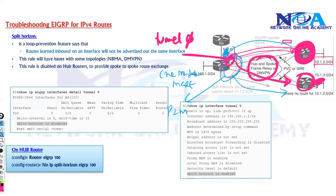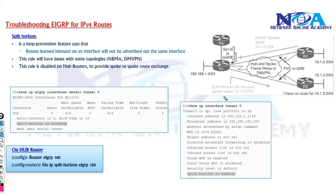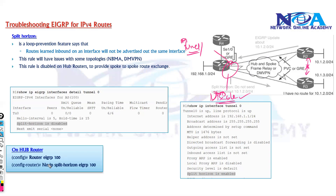This may prevent routes from router 3 from being advertised to router 2, and vice versa, impacting router advertisements. In this kind of scenario, we need to fix this by using the command 'no ip split-horizon' to disable this rule. If you don't disable it, this will prevent the spoke routes — router 2 and router 3 — from exchanging routes because they are not directly connected; they connect through the hub router using a single tunnel interface.